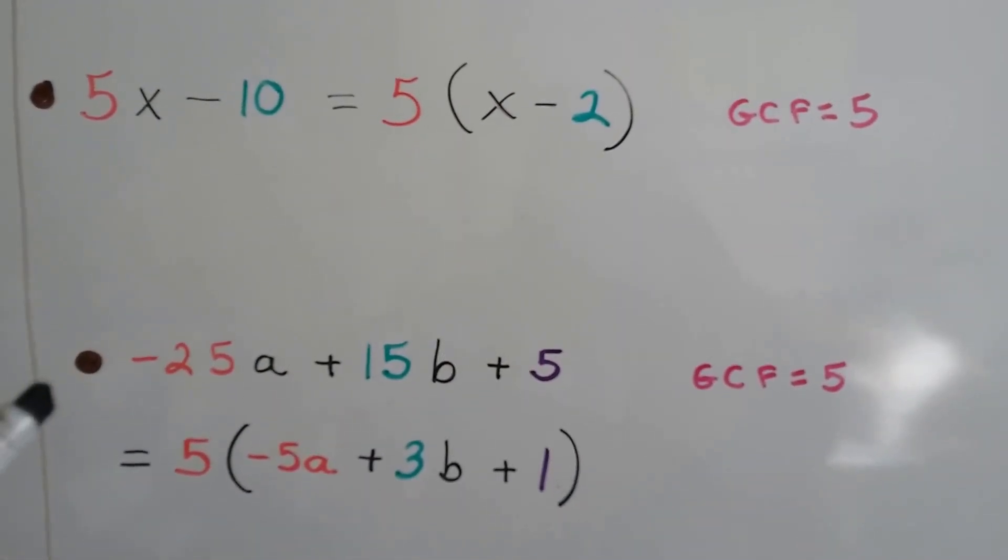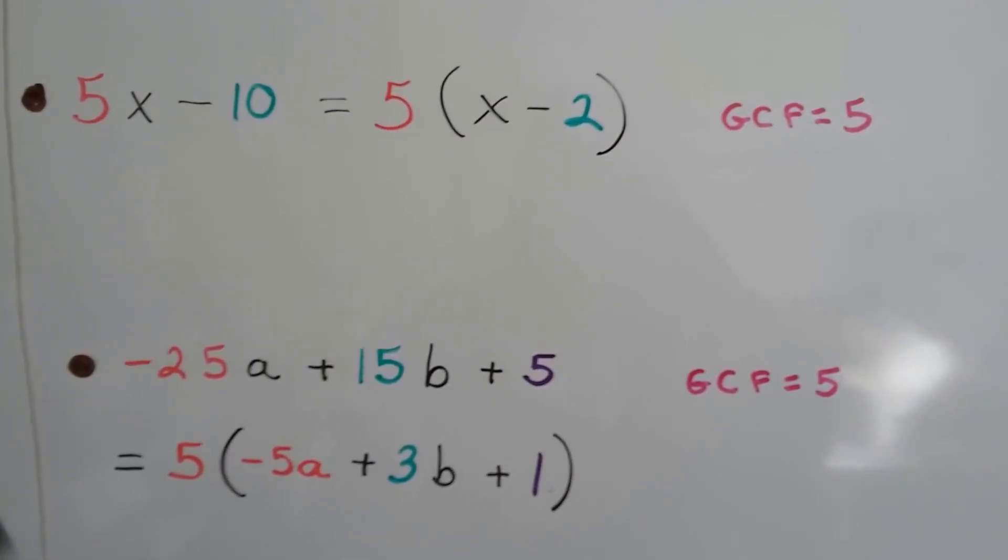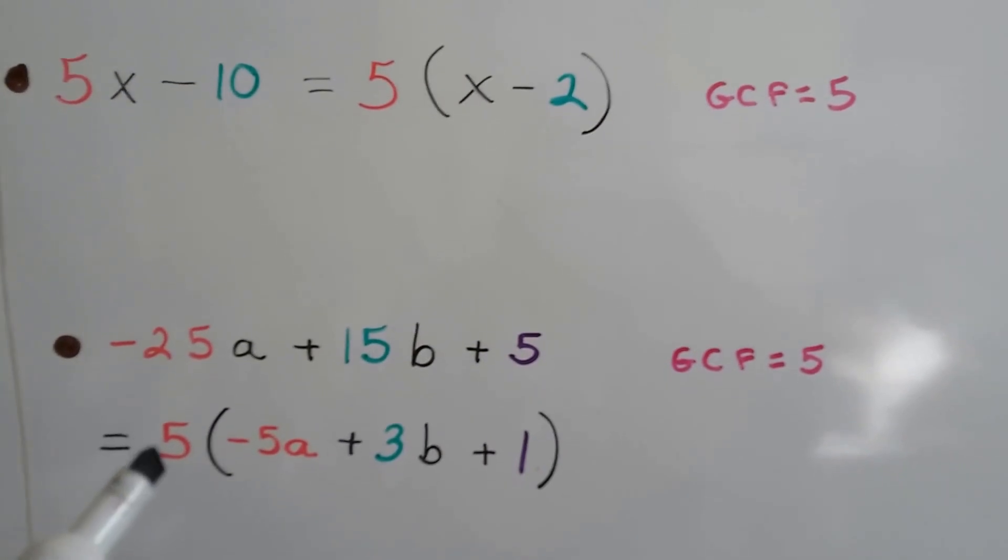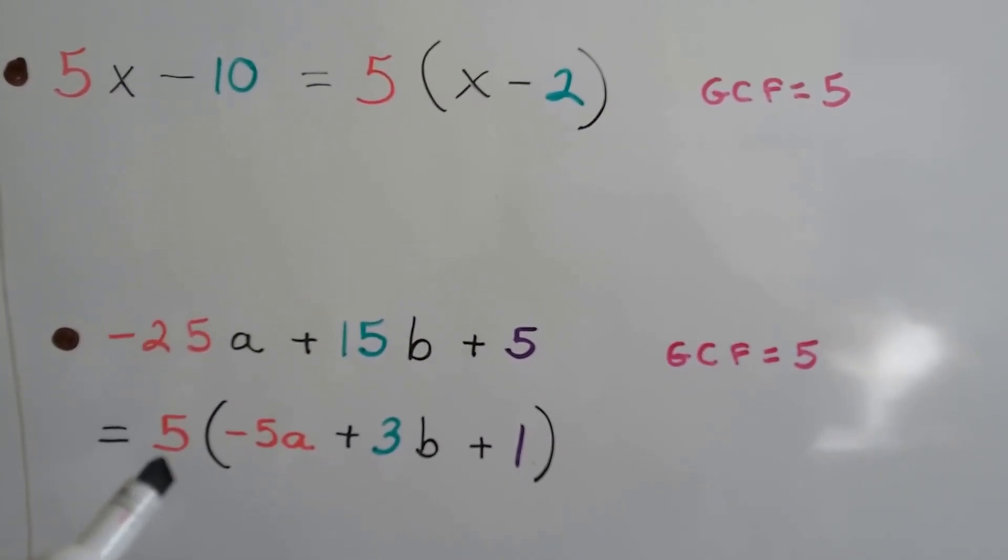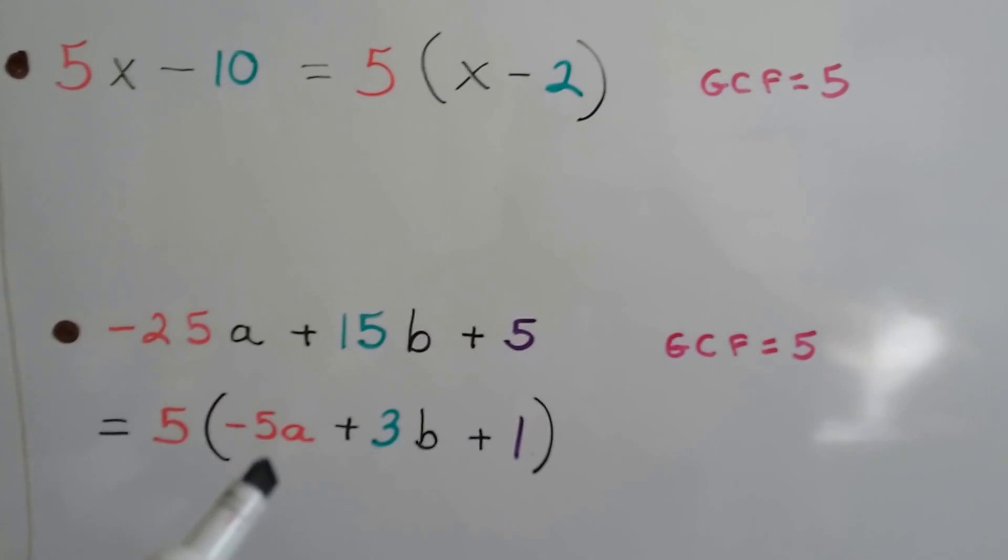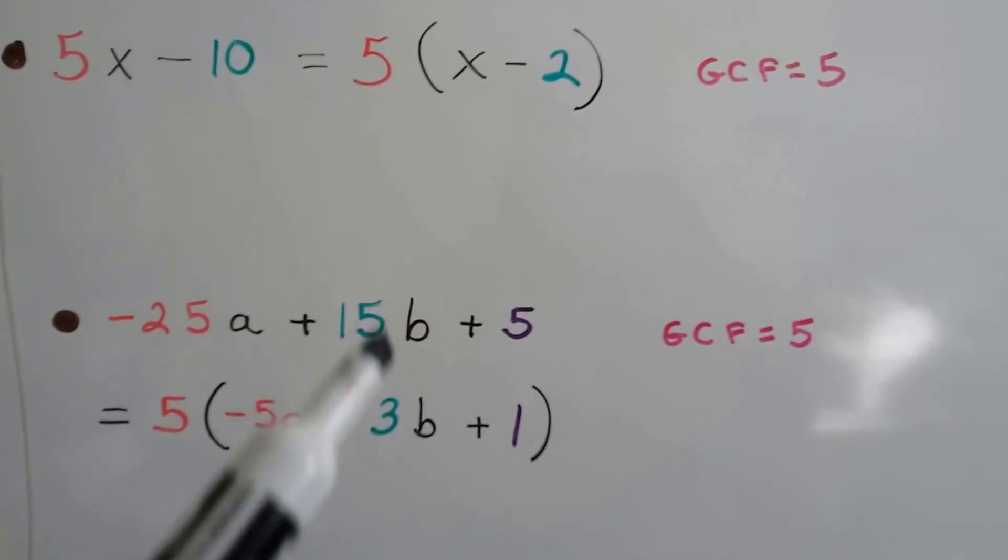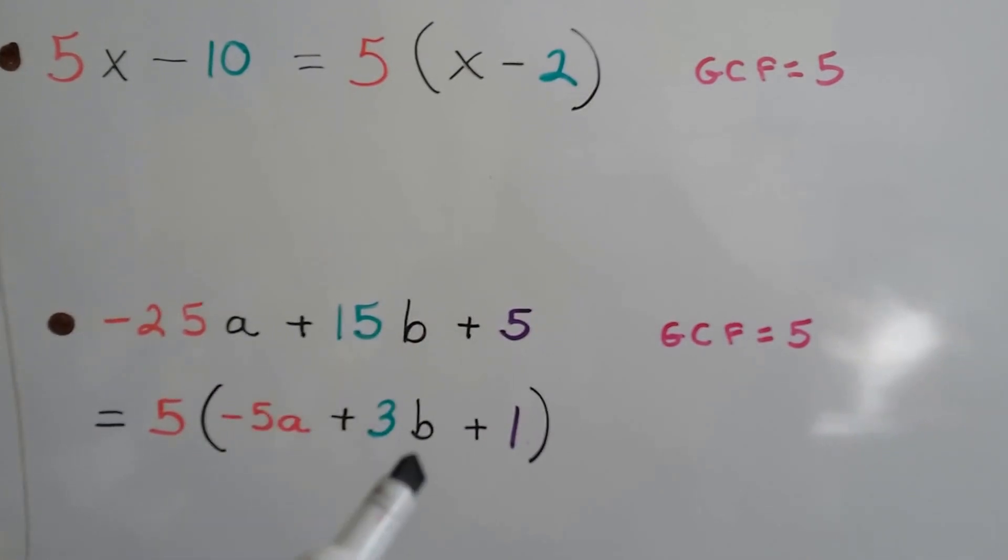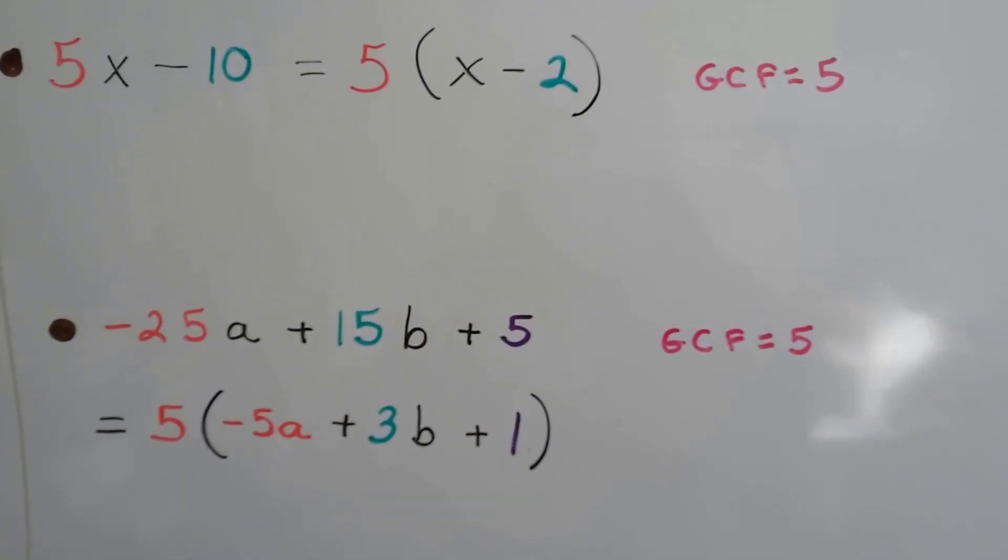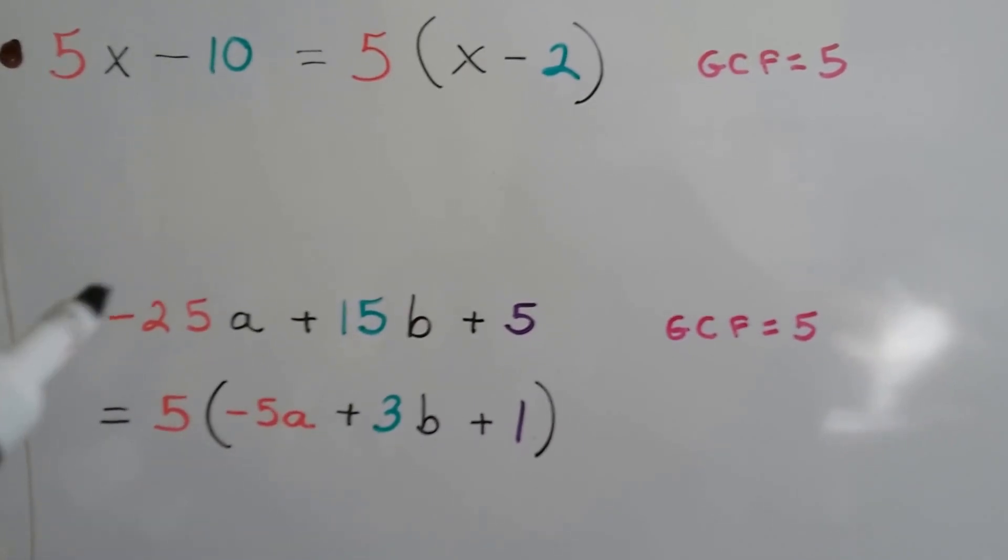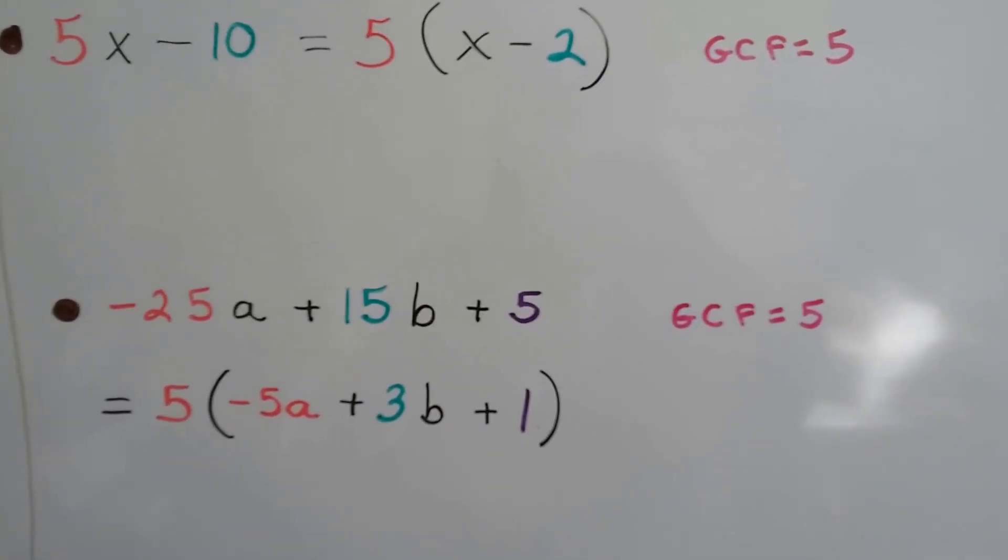For negative 25a plus 15b plus 5, the greatest common factor for these 3 terms is a 5. We can factor it out. That gives us 5 times negative 5a, that makes the negative 25a, plus 3b, that makes the 15b, plus 1, that makes the 5. If we use the distributive property, it would get us right back to this expression.